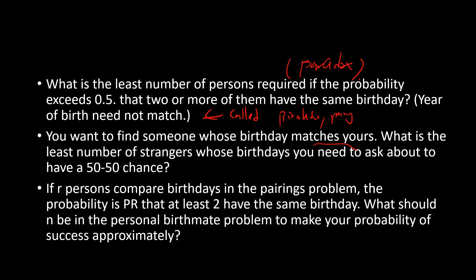What is the least number of strangers whose birthday you need to ask about to have a 50-50 chance? The third problem compares to the pairing problem: given the probability that at least two persons have the same birthday, what should n be to make your probability of success approximately equal to that same probability? This is called the birthday mate problem — you want to find someone whose birthday matches yours.